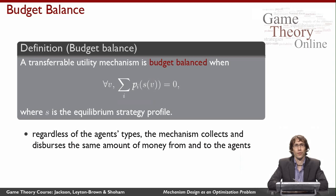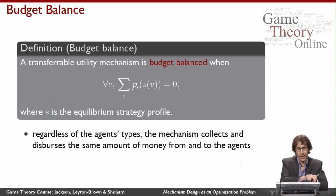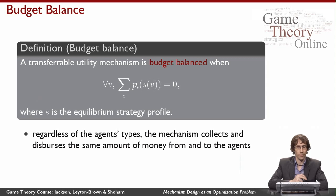Here's another constraint: budget balance. A transferable utility mechanism is budget balanced when, for all joint valuations the agents might have, and where S is the equilibrium strategy profile they follow, their equilibrium strategies yield payments that sum to zero. In other words, regardless of the agents' types, in equilibrium the mechanism both collects and disperses the same amount of money — the mechanism neither makes nor loses any money, as long as agents follow their equilibrium strategies.